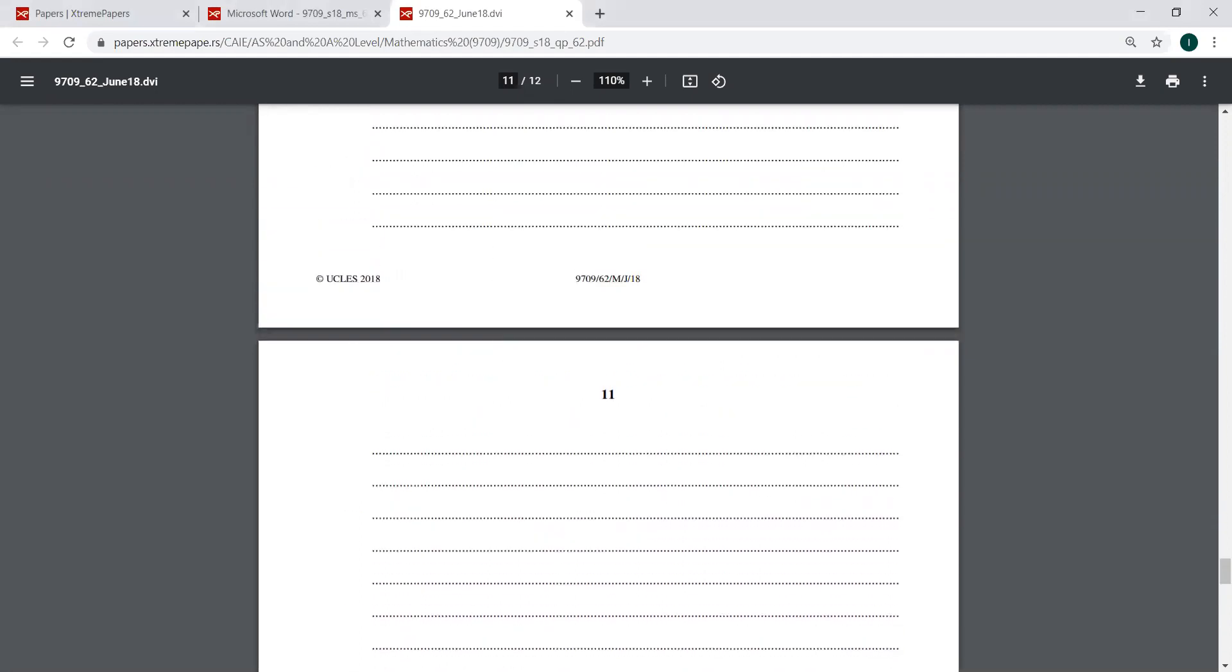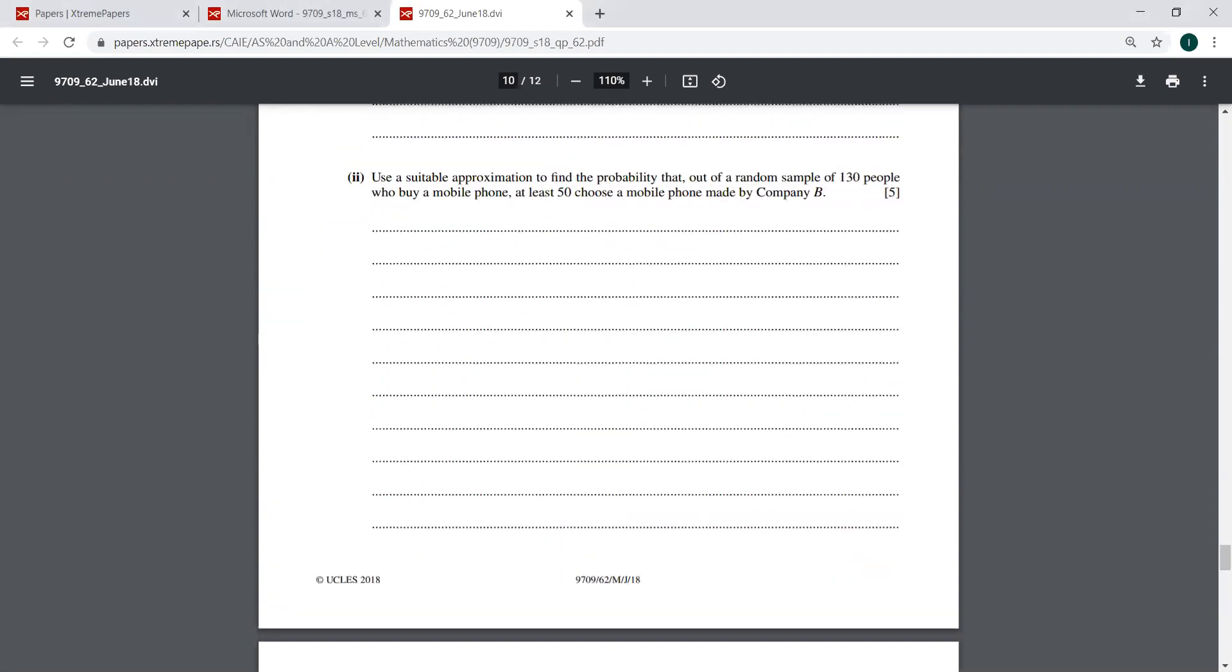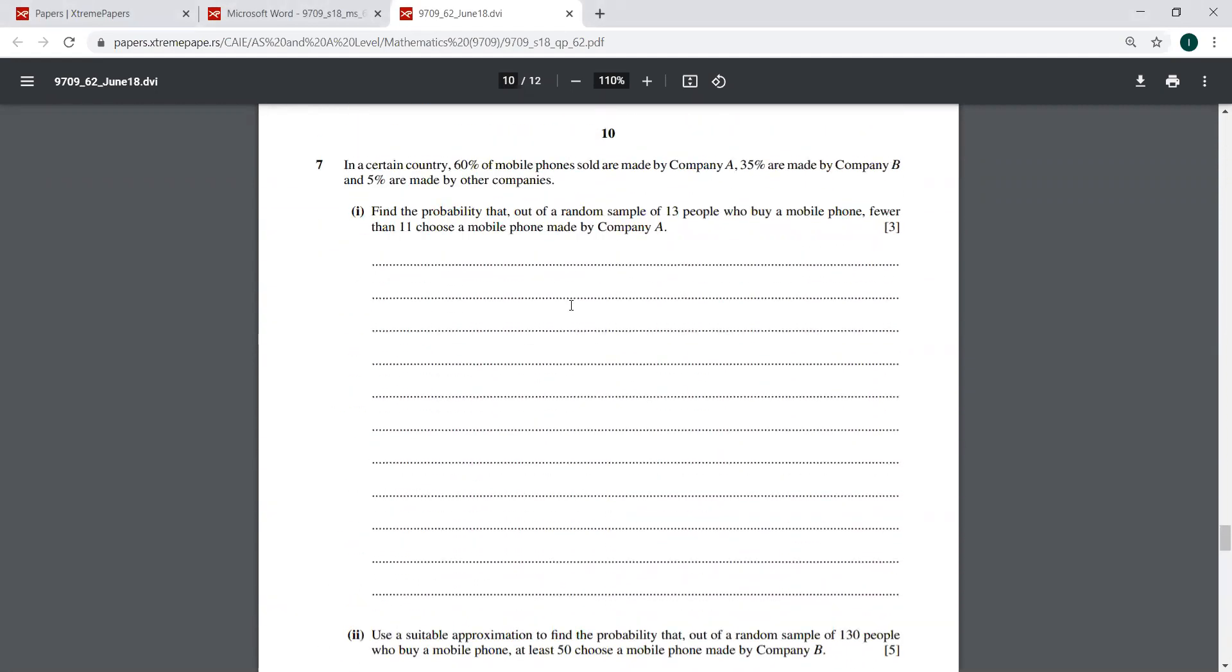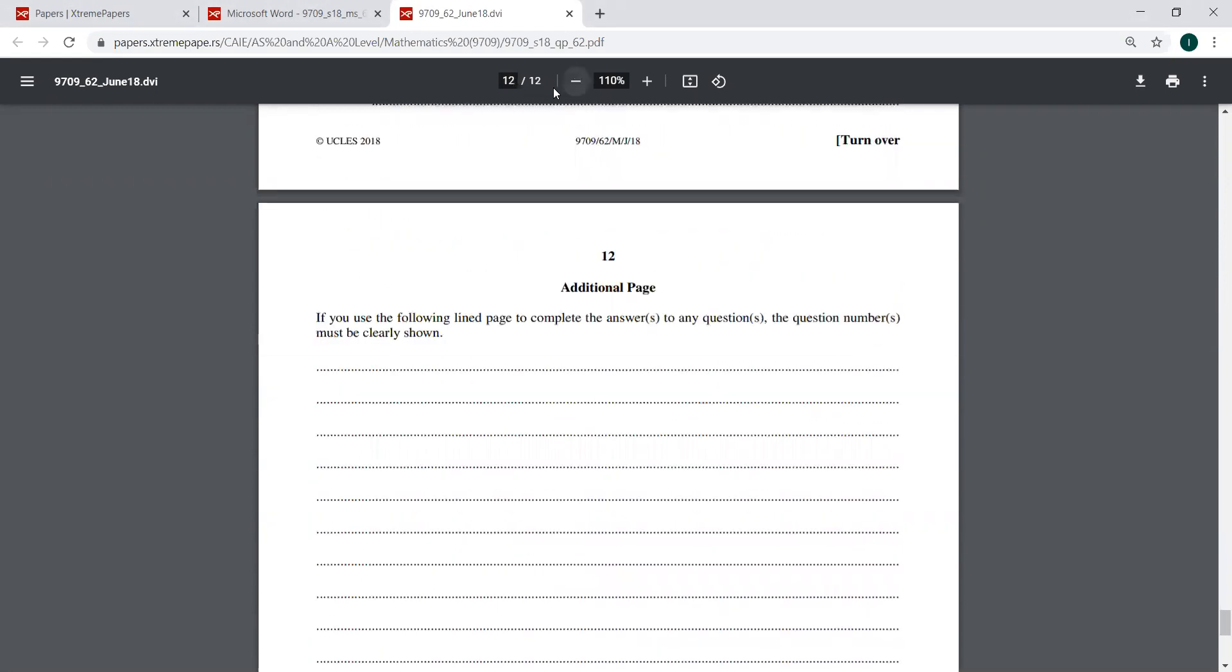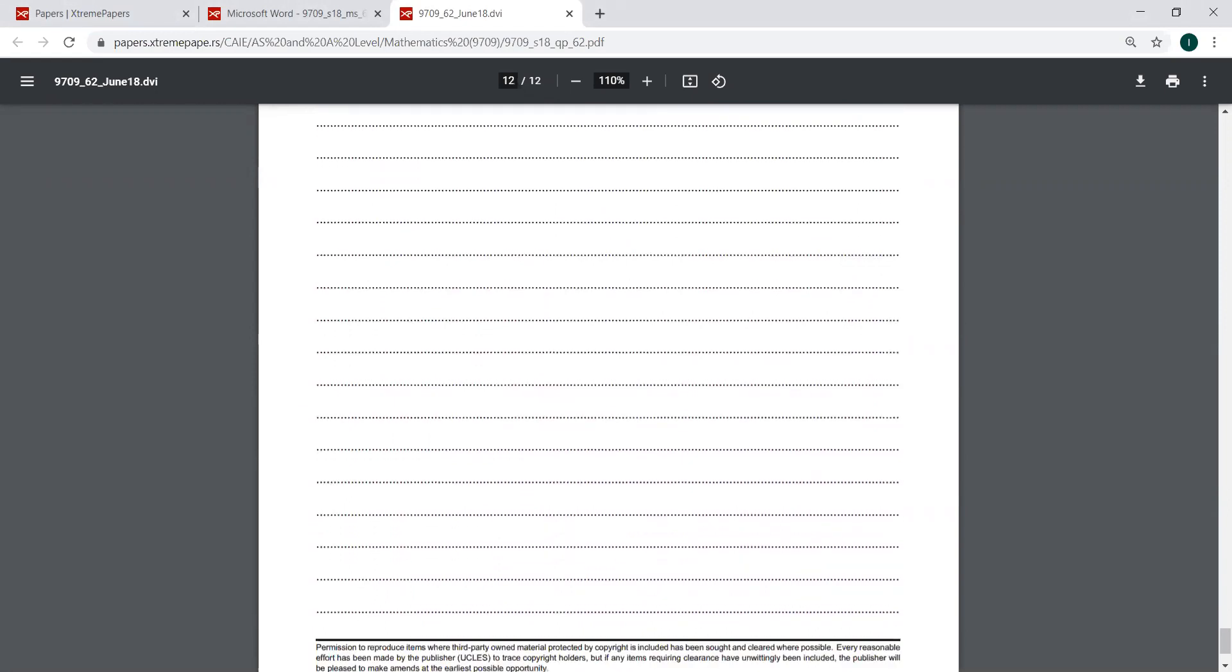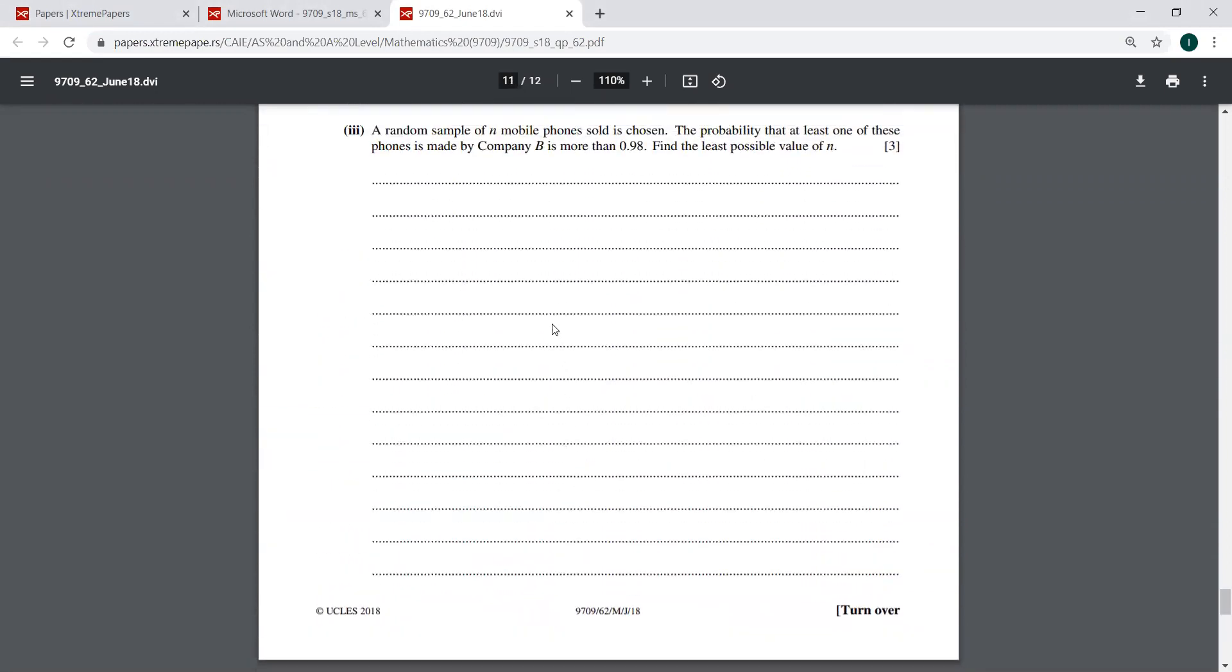I need to see what was the probability of A, B, and Z. That was 0.6, 0.35, and 0.05. So here is the last part.